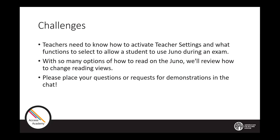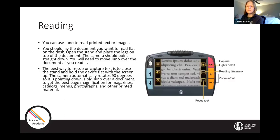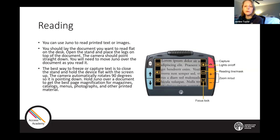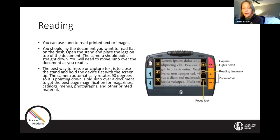Let's get started. We're turning it over to Justine to begin. You can use Juno to read text and images. What you'll want to do is lay your reading materials flat on the desk or table, open the Juno stand, lay the Juno flat on the book or worksheet, and move Juno across the page as you read. That's the live view when you're using Juno's camera.